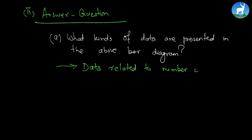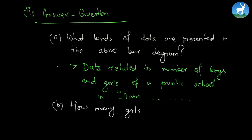So we're going to write something like: the number of boys and number of girls are presented in the above diagram. Data related to the number of boys and girls of a public school in Elam is represented in the above diagram. Now you can fill in the blanks.